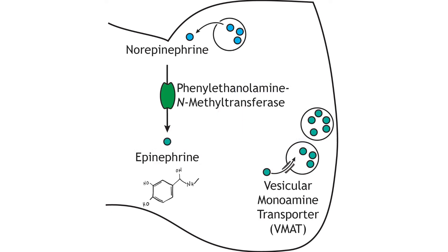Epinephrine, also called adrenaline, is a catecholamine, but it is often considered a hormone instead of a neurotransmitter. Epinephrine is primarily released by the adrenal medulla into the circulation. It is used as a neurotransmitter in only a small number of neurons.